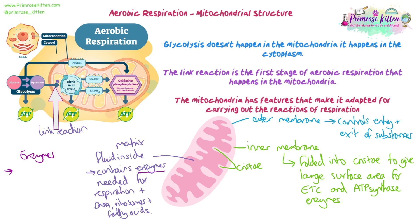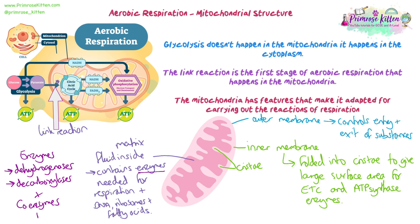A quick recap on some of the enzymes we need: there will be dehydrogenase enzymes, which remove hydrogen, and decarboxylase enzymes, which remove carbon dioxide. We'll also need our coenzymes — NAD and FAD — and these will all be in the matrix, because they are needed for the reactions that happen there.